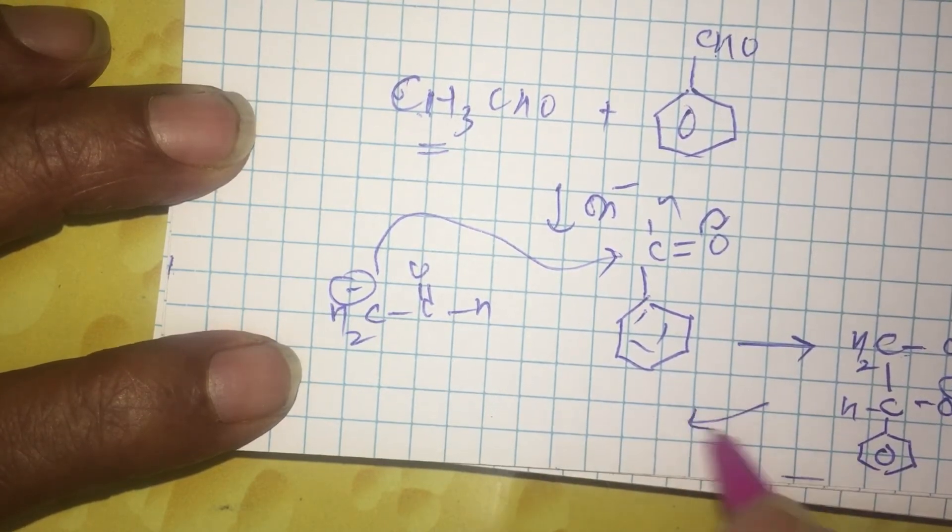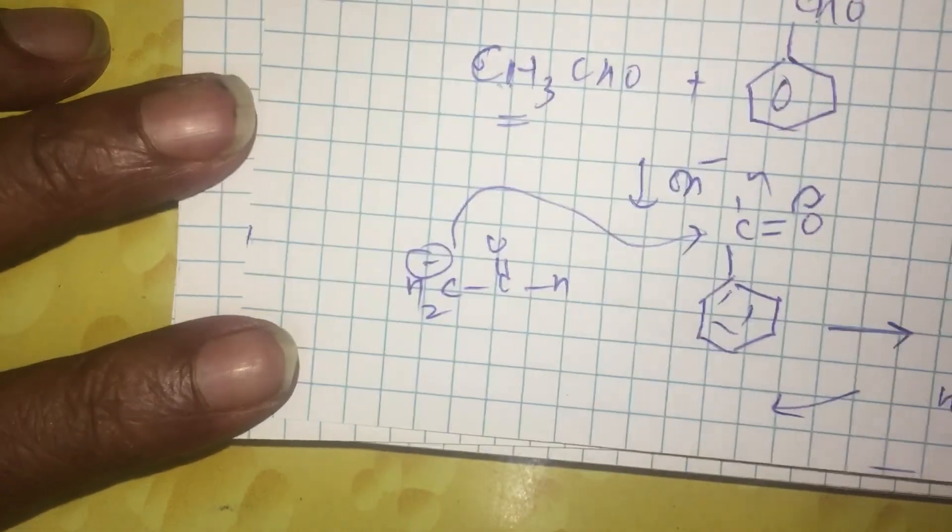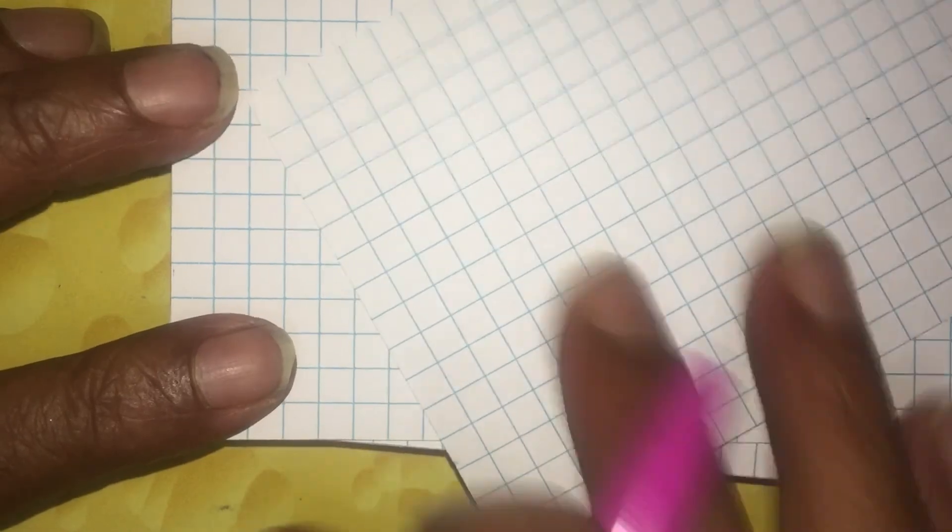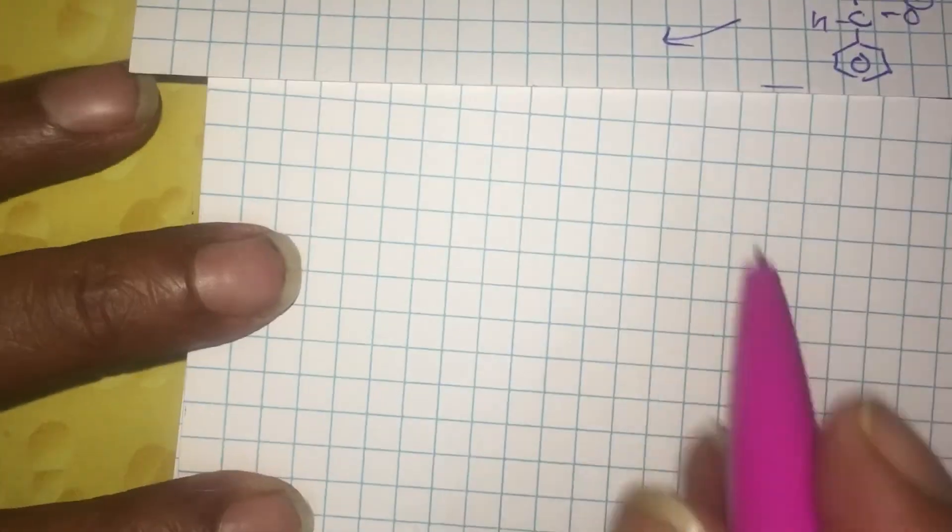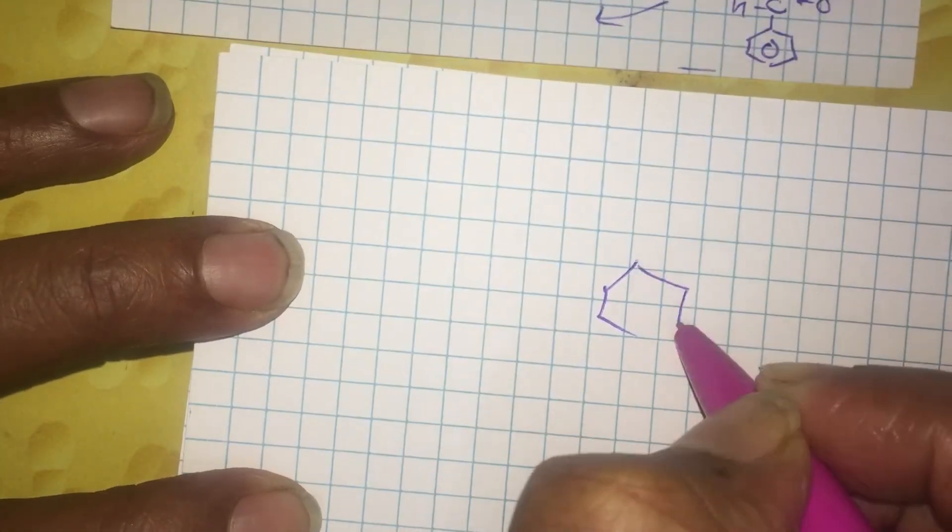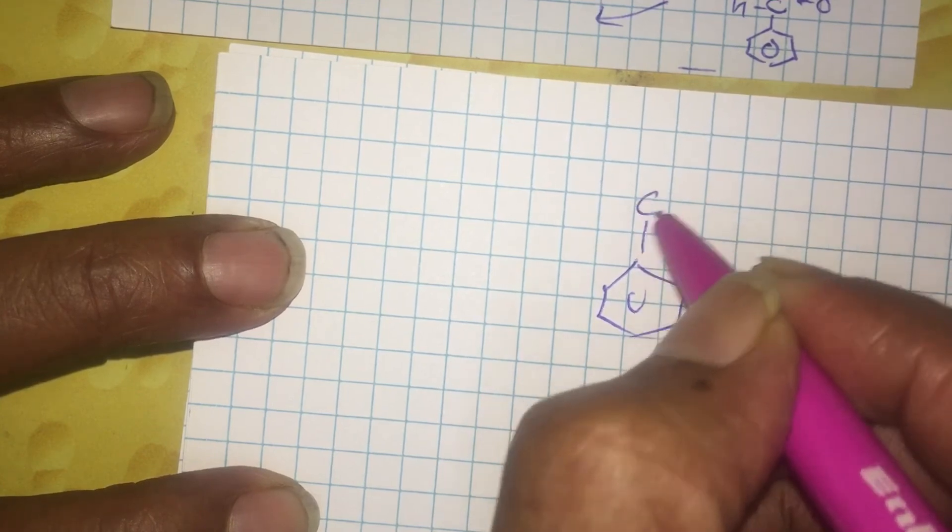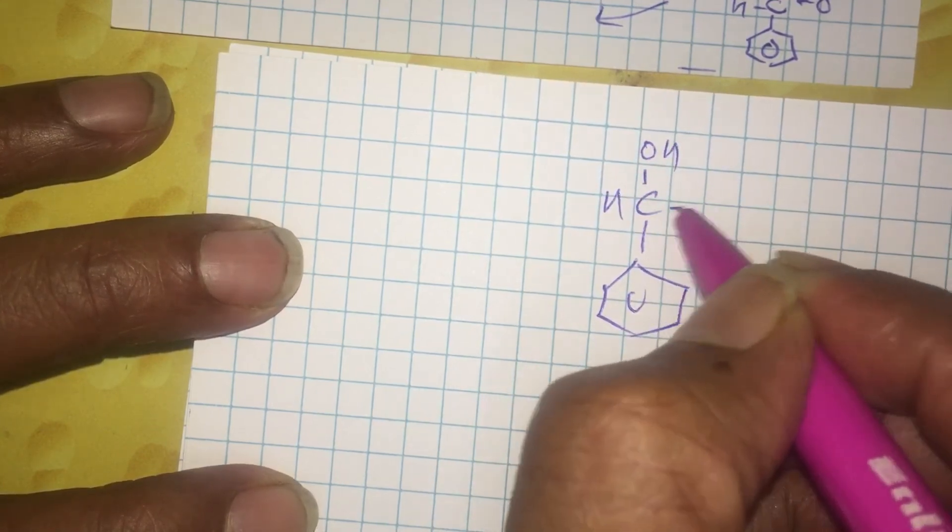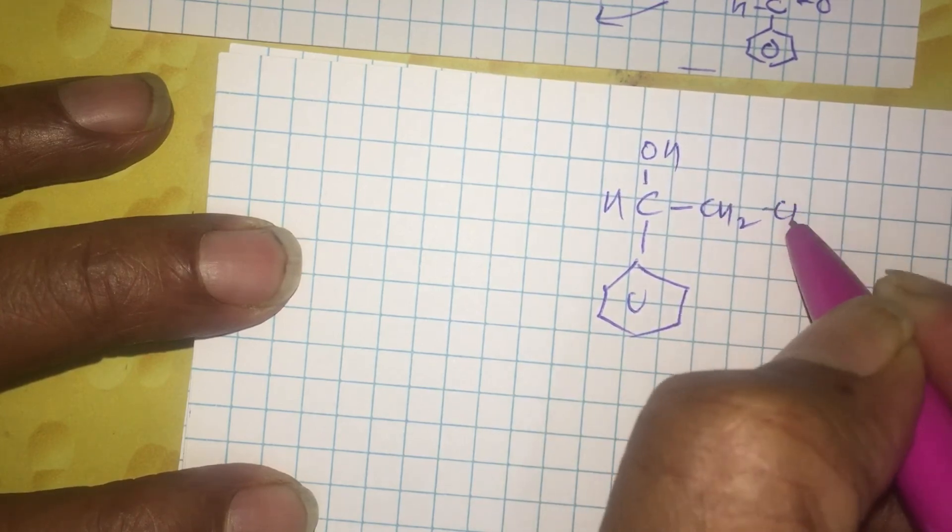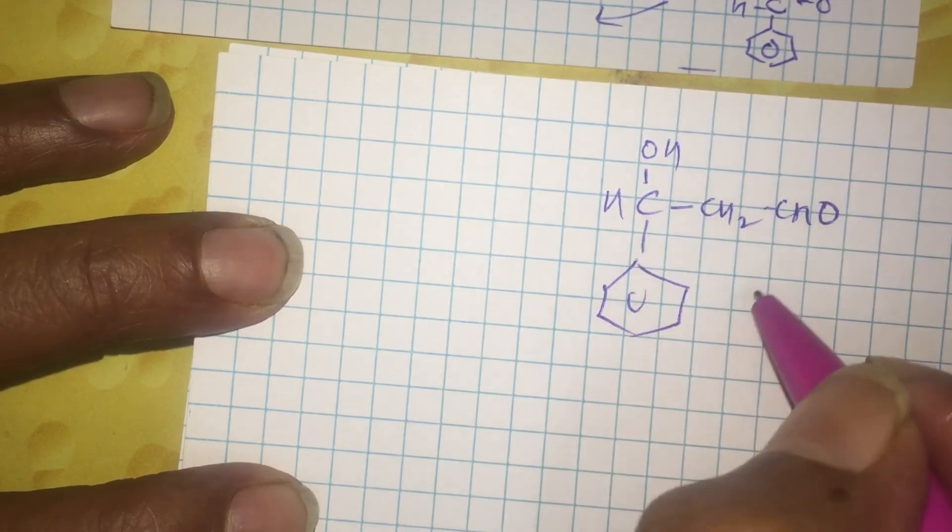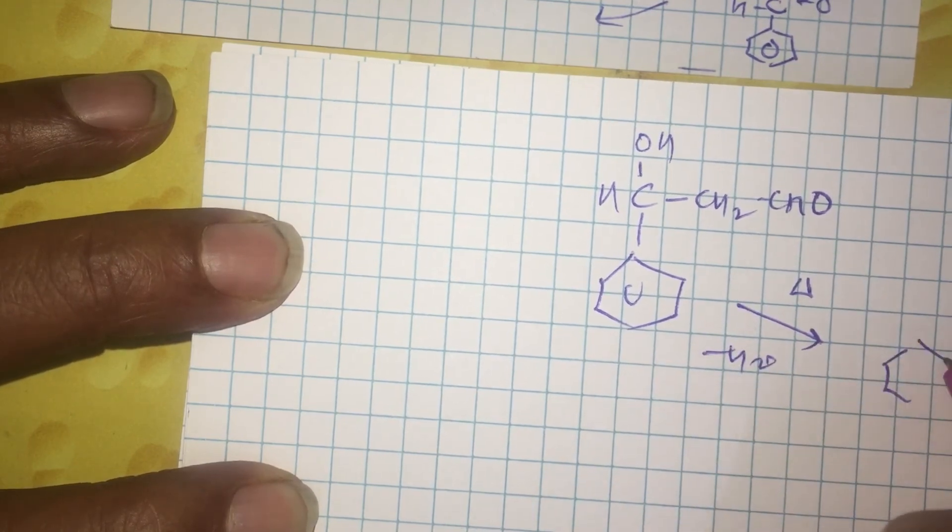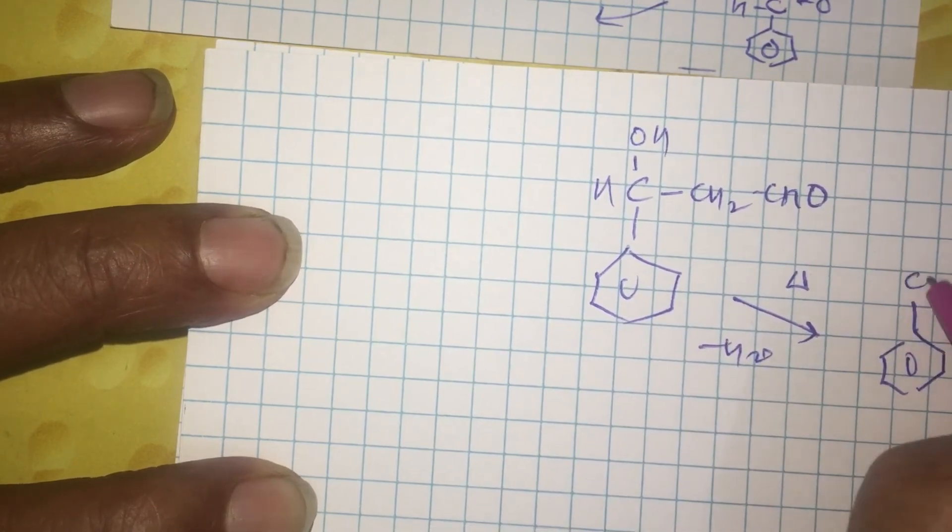And now, eventually, it can gain a proton from water to give you C6H5-CHOH-CH2-CHO. And this product, obviously, on heating can lose water to give you what is popularly known as cinnamaldehyde.